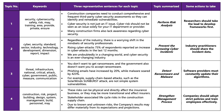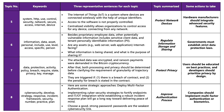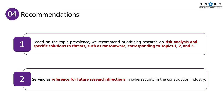Following the same process, we summarize all 8 topics, and for each topic we propose an action plan to deal with it. Based on topic prevalence, we recommend prioritizing research on risk analysis and specific solutions to threats such as ransomware, corresponding to topics 1, 2, and 3. This table can serve as a reference for future research directions in cybersecurity and the construction industry.